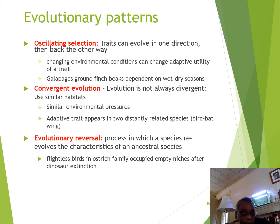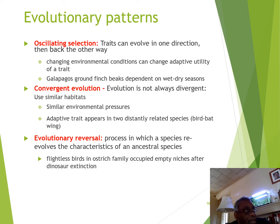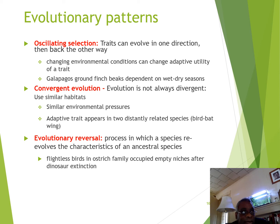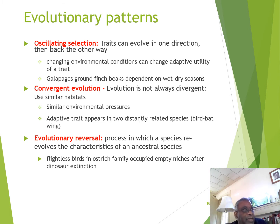Finally, there's the concept of evolutionary reversal — when a species re-evolves the characteristics of an ancestral species. A good example is the ostrich. After the Cretaceous extinction event, dinosaurs left open niches. One such niche was for large grassland animals exploiting vast expanses of semi-arid environment. Selective pressures pushed ostrich ancestors to become much larger and to lose their ability to fly so they could better exploit these large grassland areas — that is evolutionary reversal.